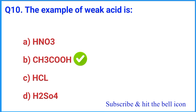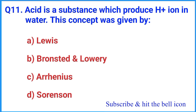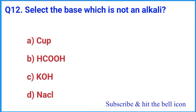Question number 11: An acid is a substance which produces H-ions in solution — this concept was given by — the correct answer is option C: Arrhenius. Question number 12: Select the base which is not an alkali — the correct answer is option A: Cu(OH)2.